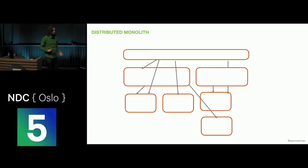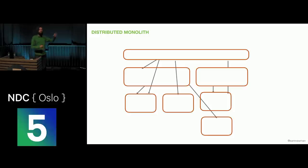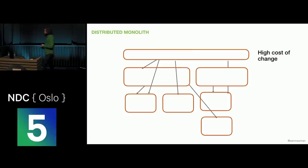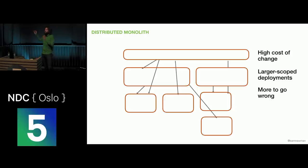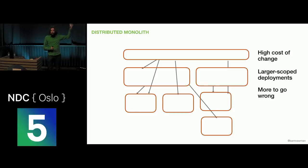The worst situation is when it's so hard to decouple the architecture that people say, let's just release it all together. You end up with 15 different teams coordinating a release on Tuesday morning — and when it doesn't work, you roll the whole thing back. These mass deployment activities are an absolute disaster. A microservice architecture is fundamentally about making it easier to release software. With a distributed monolith, we have a higher cost of change than with a single process monolith — the worst of both worlds.